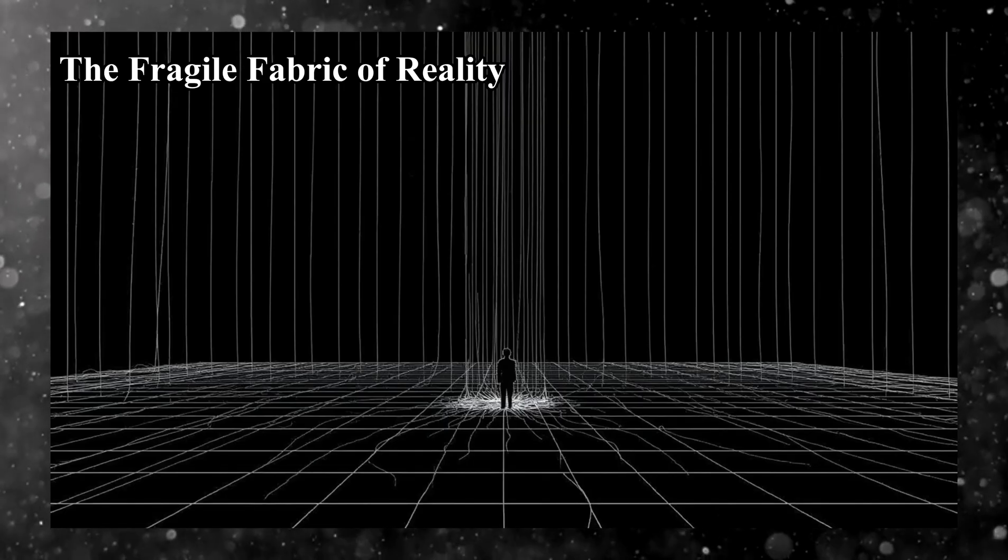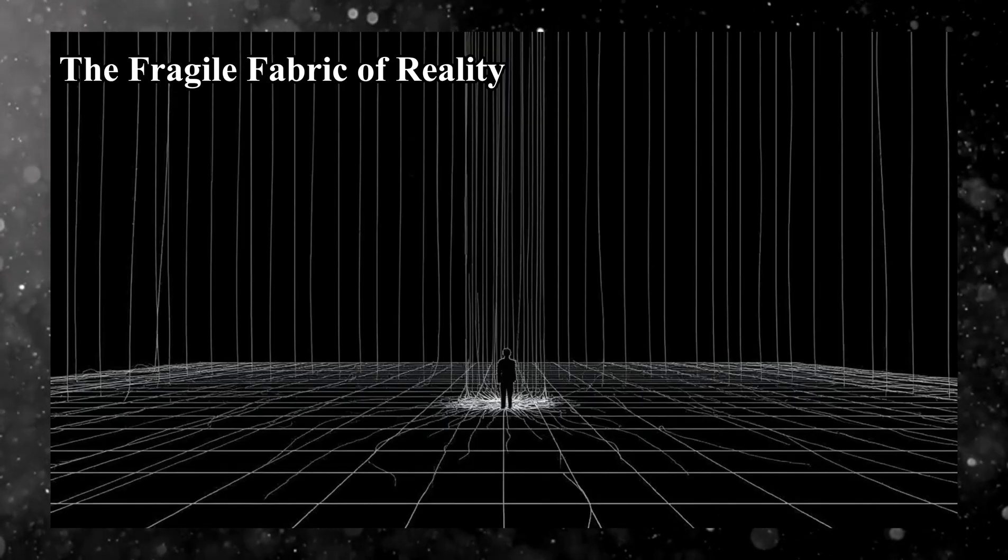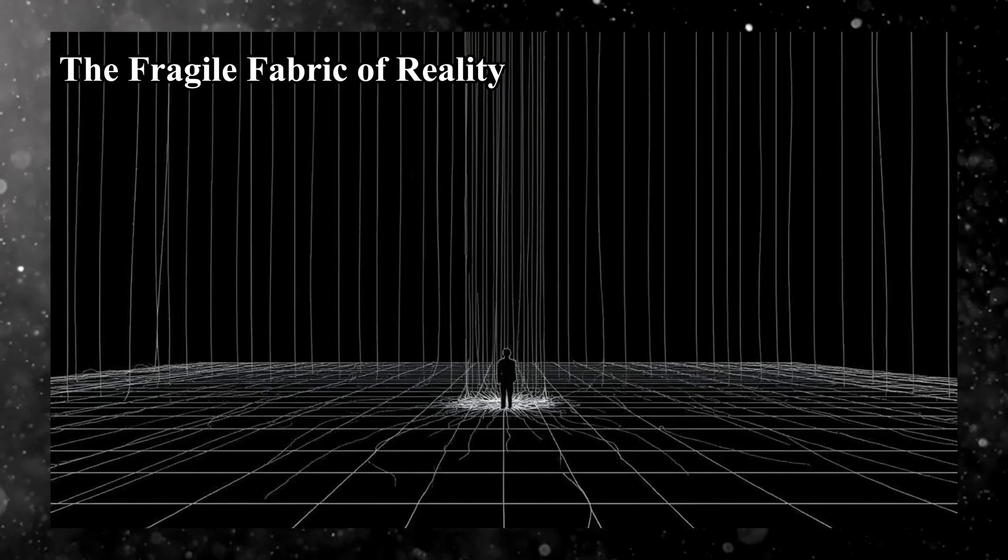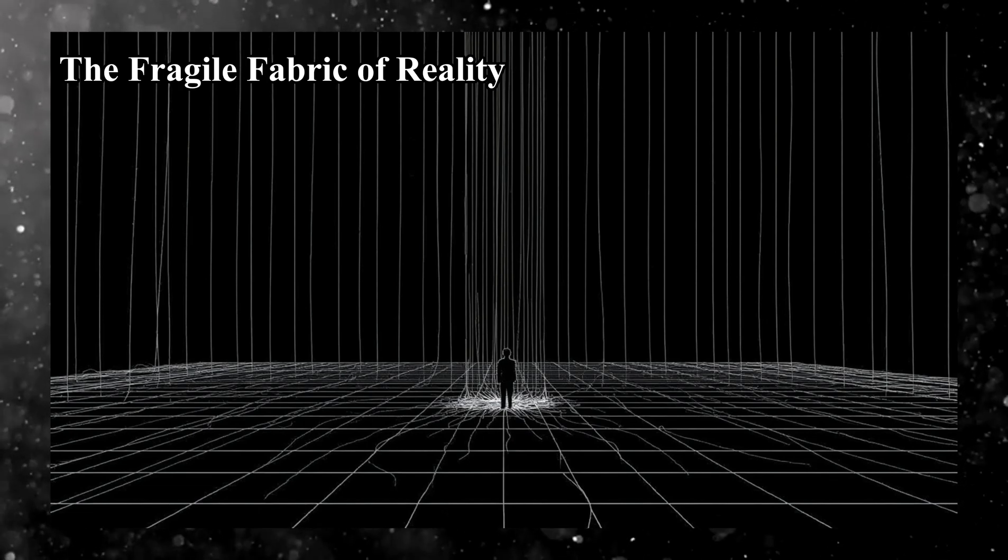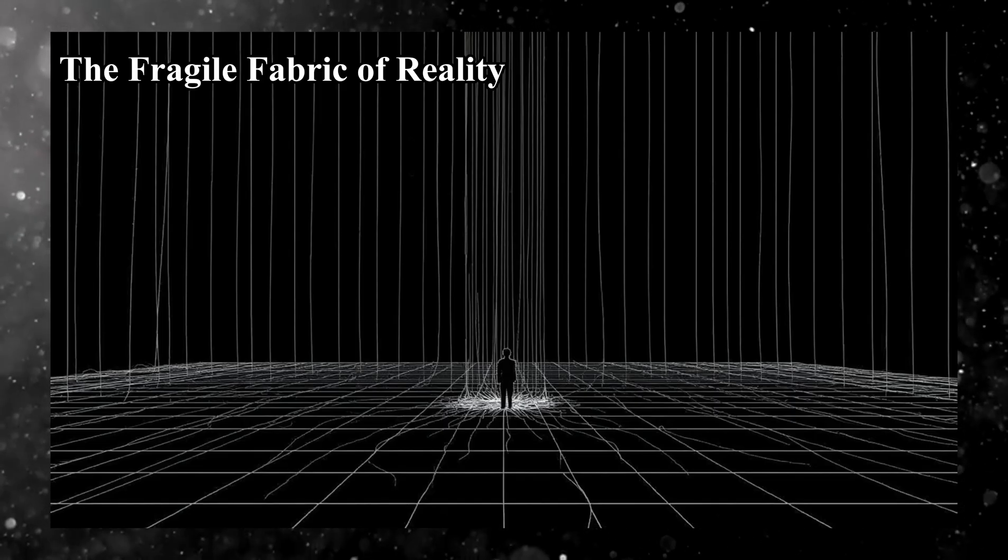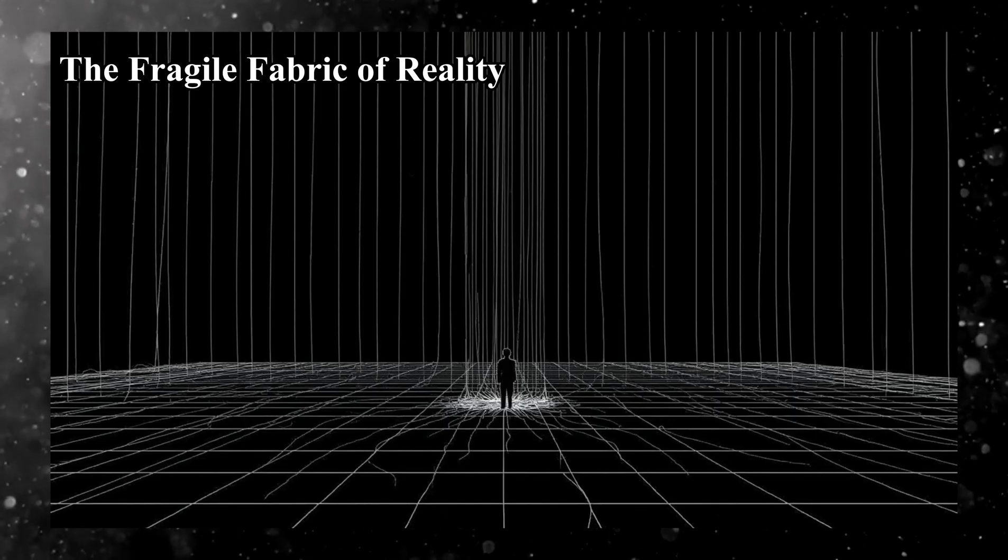Physicists often describe reality as a kind of woven fabric. The threads are time, space, matter, and energy. They intersect and hold together the world we know. But what happens if one of those threads is pulled too tight, or frays beyond repair?